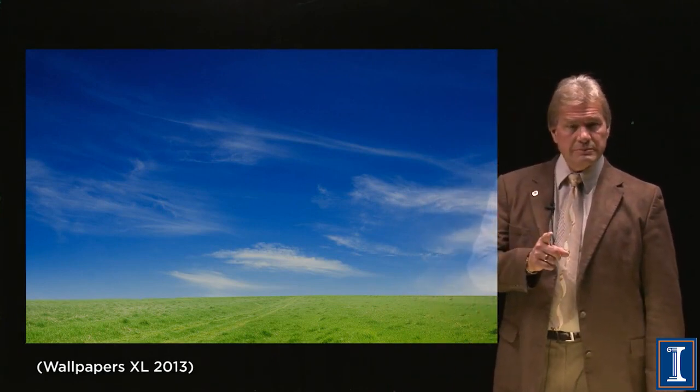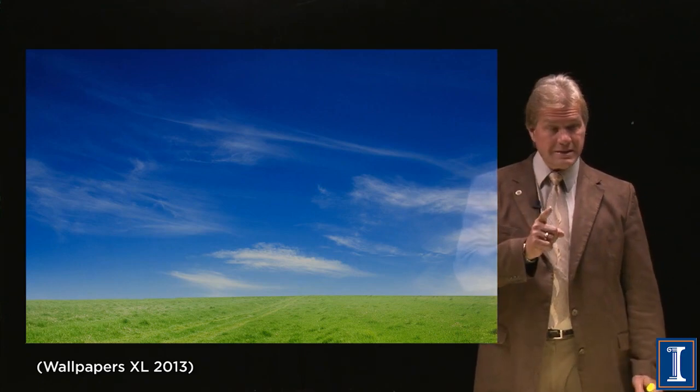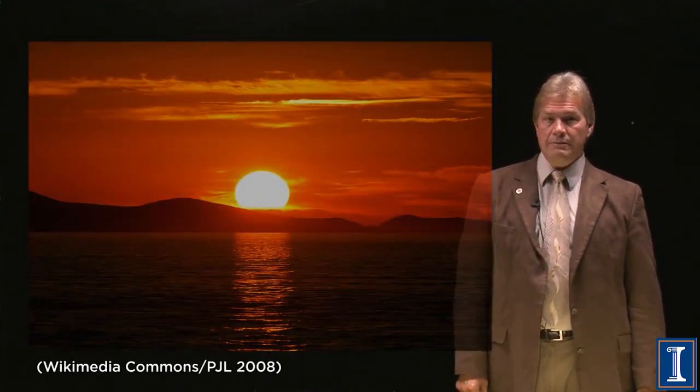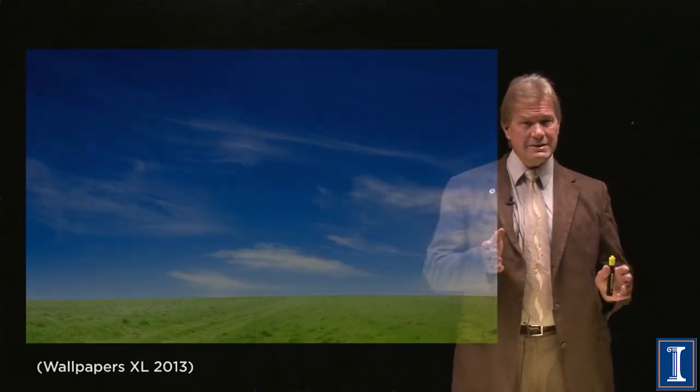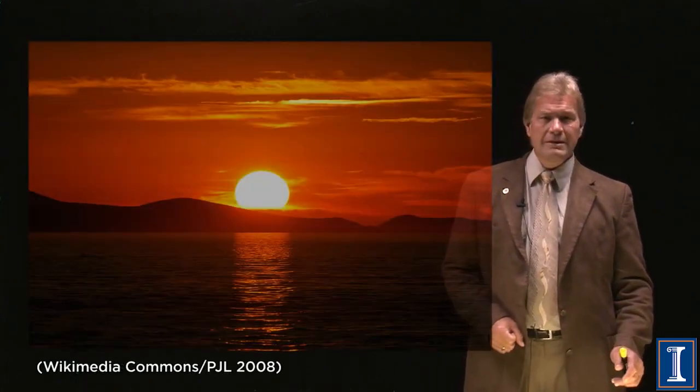The sky is blue because the sunset is red. Just about anything in the atmosphere — even the molecules of air — scatter light according to a very interesting physics formula: one over the wavelength to the fourth power.